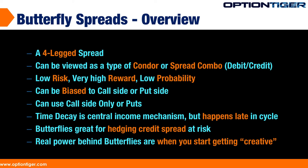However, to get that reward, it's a very low probability. So it's a low risk, very high reward, and low probability strategy. It can be put biased to one side — if you think a stock or index is going to go up or down, you can structure the butterfly to the call side or the put side if you were bearish. It's a four-legged structure, but it generally uses three strikes: there's one middle option. You can use either the call side only or the put side.